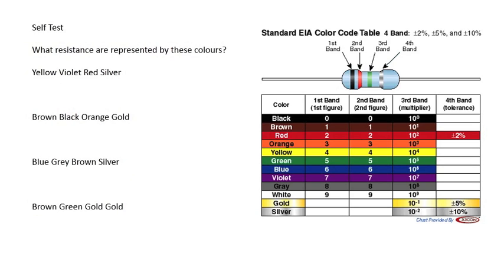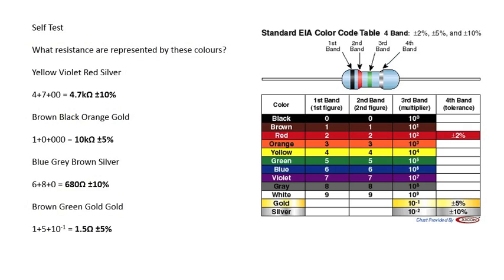Pause the video again and try to determine the resistance represented by these colors. Here are your answers for this part. Notice the fourth resistor: brown, green, gold, and gold. We take one for brown, five for green, and then a multiplier of 10 to the power of negative one, or 0.1, and we come up with 1.5 ohms.